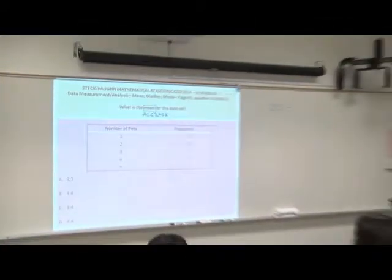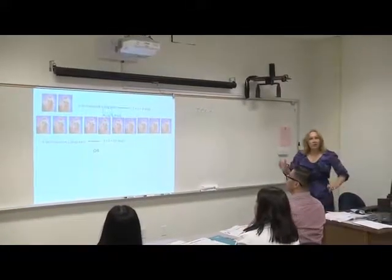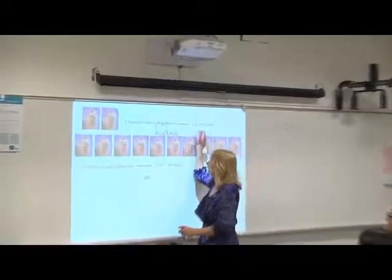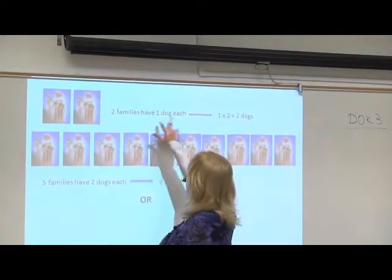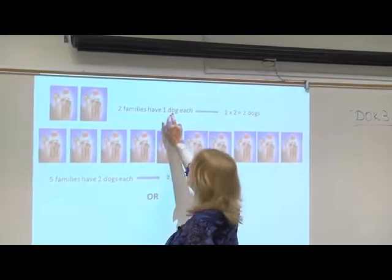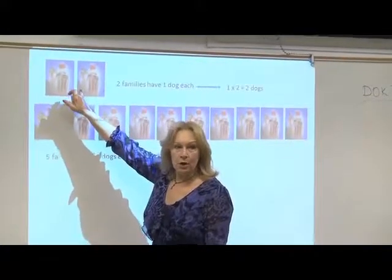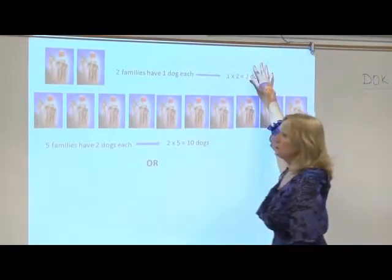One thing you can do, you just start counting dog by dog, right? But it's going to be very confusing. If I say that two families have a dog, so one family have a dog, another have a dog, so there are two dogs here.